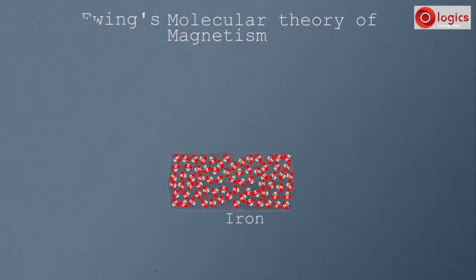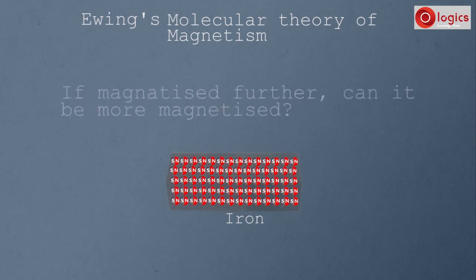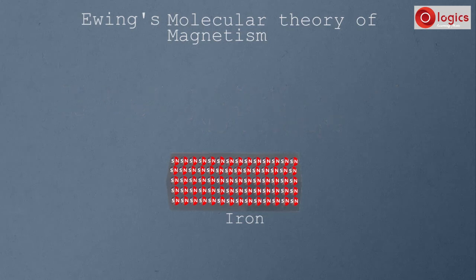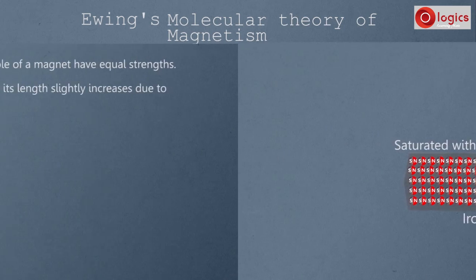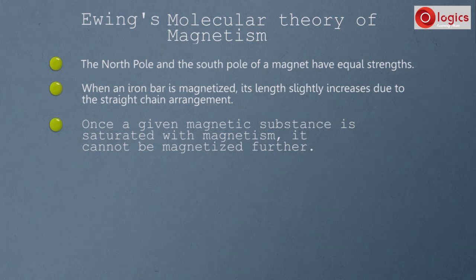Once an iron bar is magnetized and becomes a magnet, can it be magnetized further? No. A magnetized substance cannot be magnetized further because of saturation with magnetism. So this theory explained why, once a given magnetic substance is saturated with magnetism, it cannot be magnetized further.